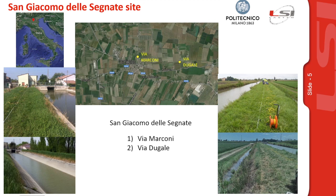In this slide, the first two test sites are shown, where electrical resistivity tomography was used in a time-lapse manner to monitor saturation and seepages in the levees. To do the tests, we used a portable instrument, an IRIS SYSCAL PRO. These two sites — Via Marconi and Via Dugale — are in San Giacomo delle Segnate in Northern Italy and have different characteristics. Via Marconi is in the center of the village with high exposure of the surrounding area, while Via Dugale was subject to a non-concentrated seepage.